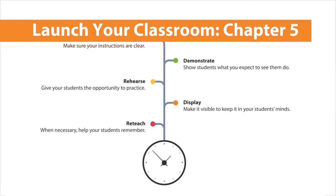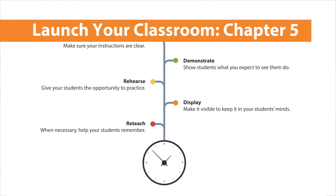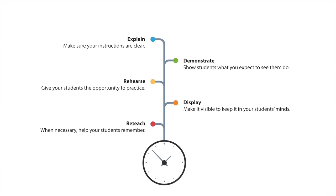So how do we teach these procedures to our students? There's essentially a process for doing that with a few different steps. The first thing you'll need to do is explain the procedure or transition you're trying to have your students do. Go step by step and make sure it is very clear, avoiding any misunderstandings, including every part of the procedure or transition and allowing students to ask questions. You want to verbalize those steps and also make sure to write them down so students can read and refer back to them.